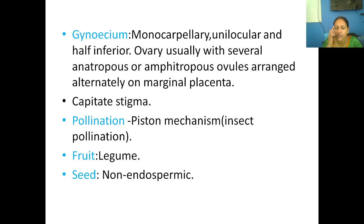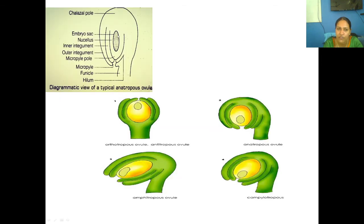The gynoecium is monocarpellary and unilocular. The ovules can be anatropous or amphitropous. Regarding ovule structure — the micropyle region, the chalaza region, the funicle, and the position of the embryo and egg cell. Orthotropous ovules are almost straight; anatropous involves a 180-degree turn; amphitropous is horseshoe-shaped; and campylotropous shows moderate tilting. These are the different types of ovule structures.